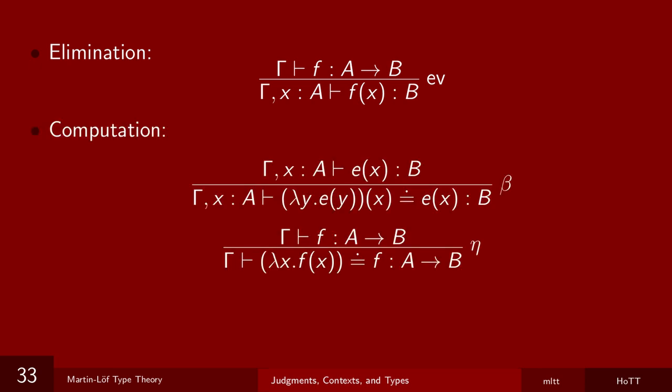And finally, I have two rules governing how lambda abstraction and evaluation interact. The first one, known as the beta rule, says that applying lambda y dot e of y to x is the same thing as e of x. So in a sense, lambda abstracting and then evaluating gets you back where you started. And the eta rule says the other way around. If you have f from A to B, then apply it to some x, then if lambda abstract the x, you end up with f back. In other words, a lambda term that just takes an argument and applies f to it is the same thing as f itself. And those are the rules introducing arrow types.